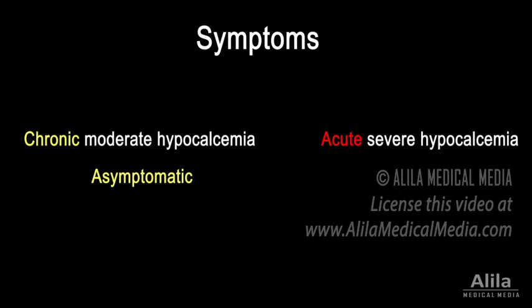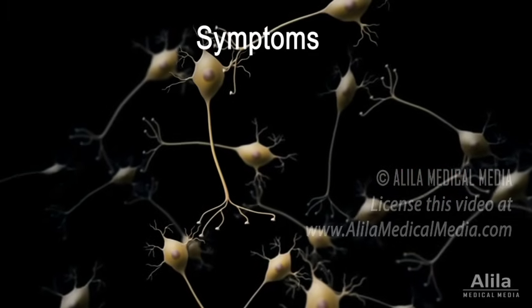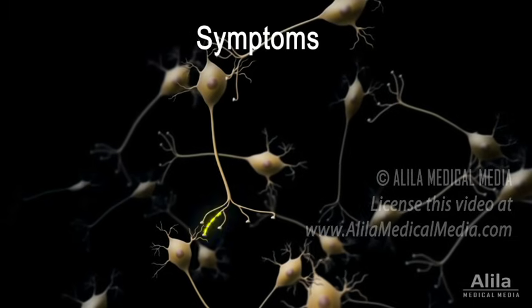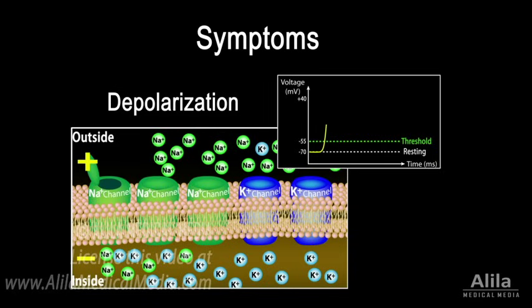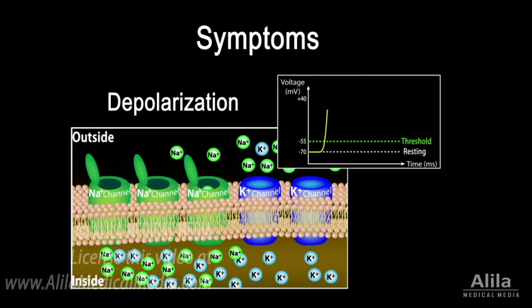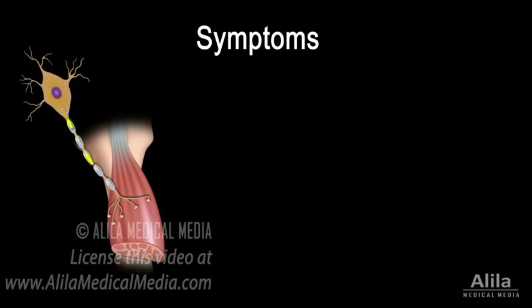Most symptoms of acute hypocalcemia can be attributed to the effect it has on action potential generation in neurons. Because extracellular calcium inhibits sodium channels and consequently depolarization, reduced calcium level makes it easier for depolarization to occur. Hypocalcemia therefore increases neuronal excitability, causing neuromuscular irritability and muscle spasms.